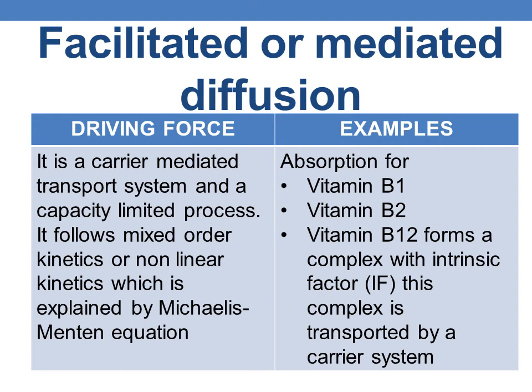Facilitated diffusion is a carrier-mediated transport and a capacity-limited process due to the limited number of carriers. It follows mixed-order or non-linear kinetics, best explained by the Michaelis-Menten equation. Vitamins B1, B2, and B12 are absorbed through facilitated diffusion. Vitamin B12 specifically forms a complex with the intrinsic factor, a glycoprotein produced by gastric parietal cells, and this complex is transported across the membrane by a carrier system.